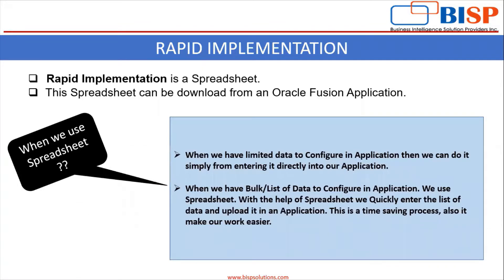What is rapid implementation? Basically, rapid implementation is a spreadsheet that can be downloaded from an Oracle Fusion application. When we have limited data to configure in the application, we can enter it directly. But when we have bulk or a list of data to configure, we use the spreadsheet to quickly enter and upload the data. This is a time-saving process and it makes our work easier.